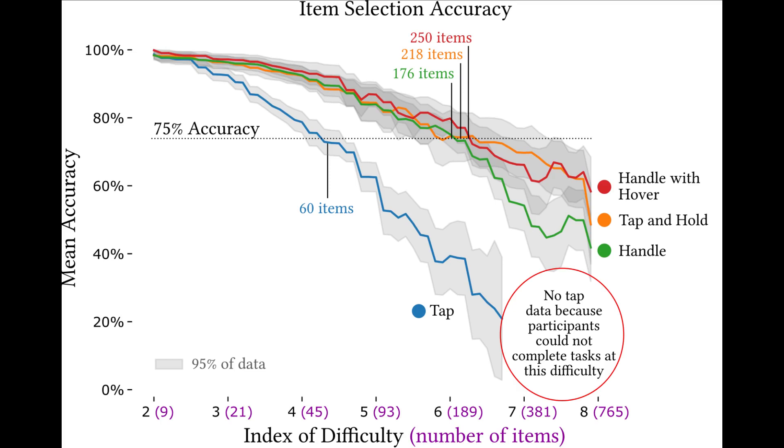Here are the results. For all techniques, as more and more items were displayed to participants, their accuracy dropped. The main finding is that the accuracy dropped much more dramatically for the tap selection than for any of the feedback providing techniques.